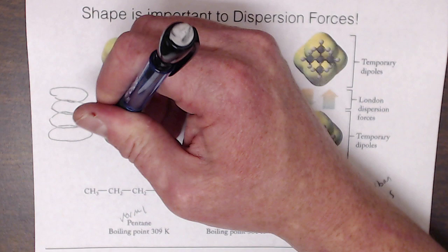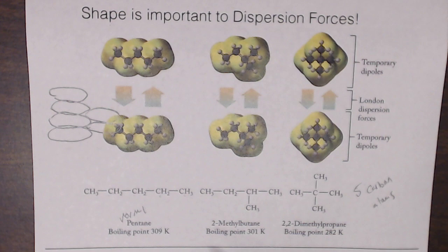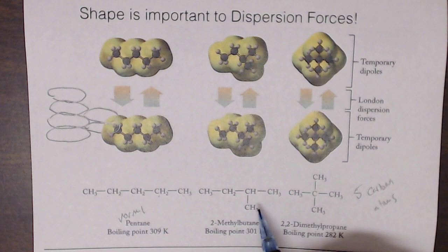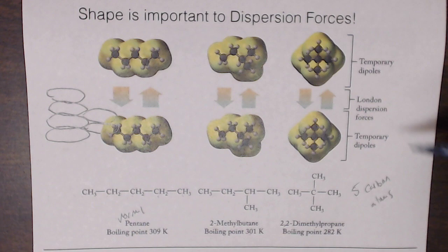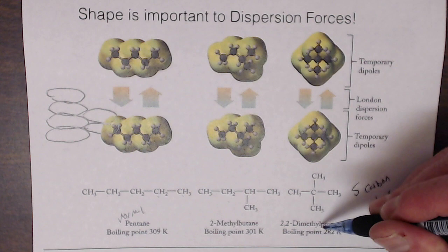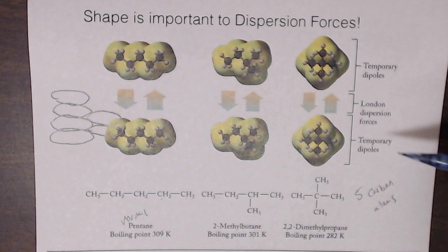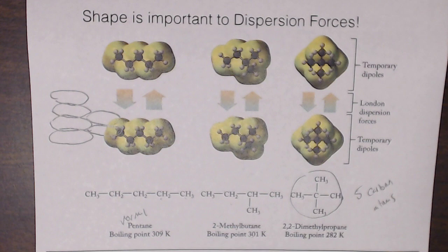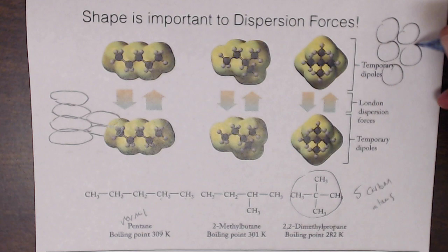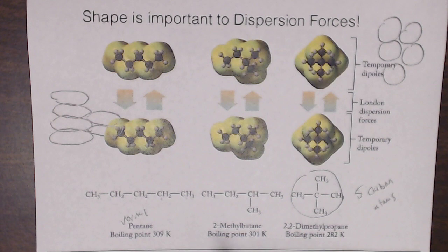2-methylbutane, also five carbons but not in a straight chain, has a lower packing efficiency and a slightly lower boiling point than n-pentane. 2,2-dimethylpropane is shaped like a sphere, and you can't pack spherical shapes together as efficiently as elongated ones — there's more space between them. This drives the boiling point way down. The higher the boiling point, the stronger the intermolecular forces, and shape matters significantly.